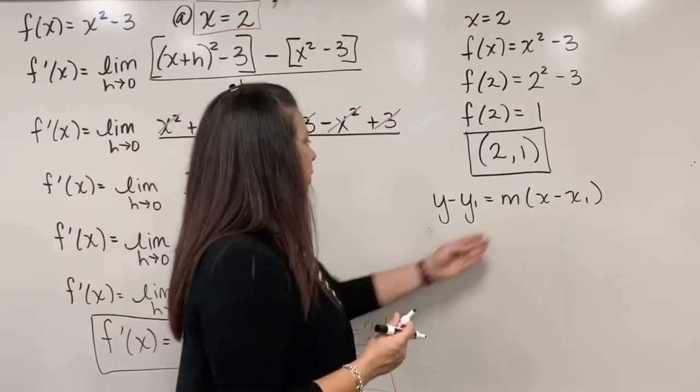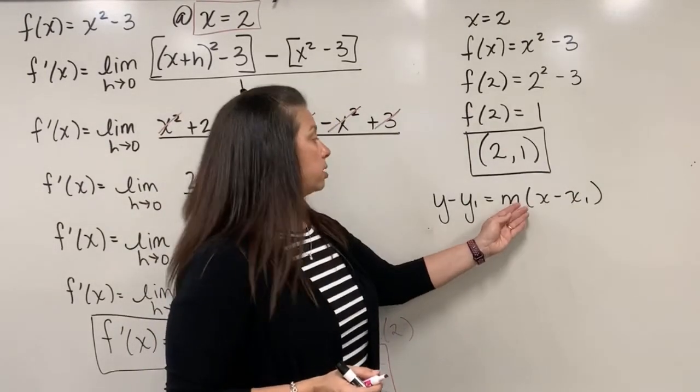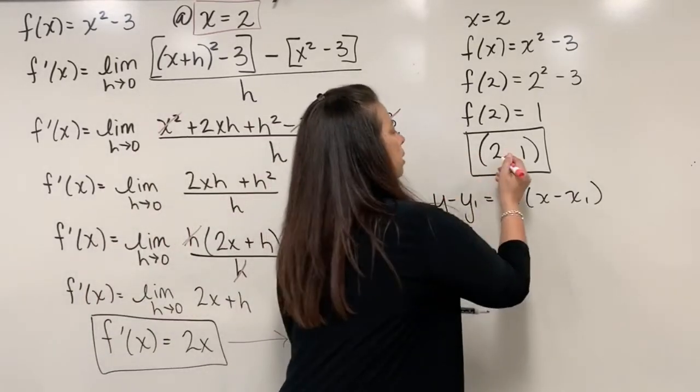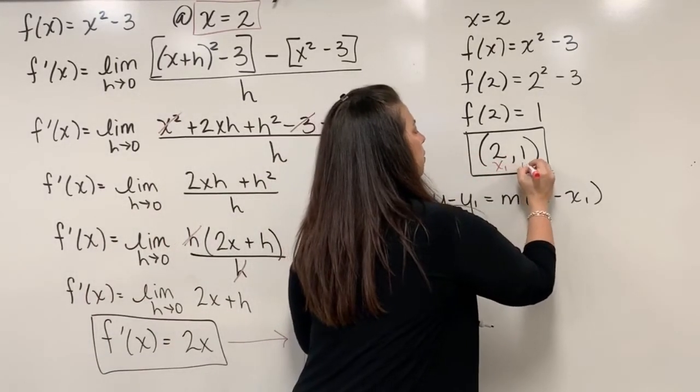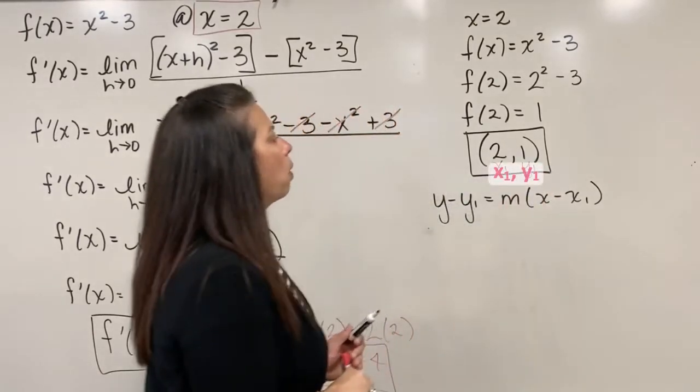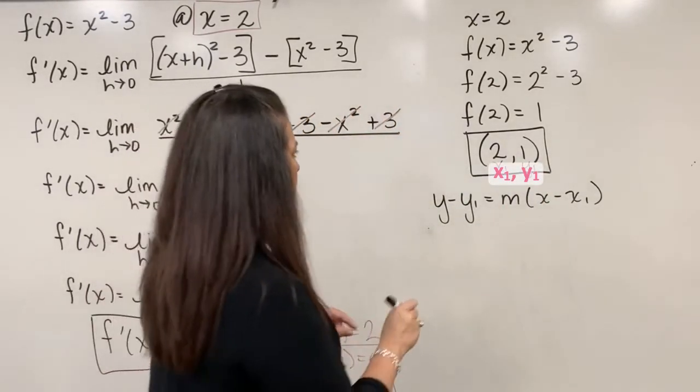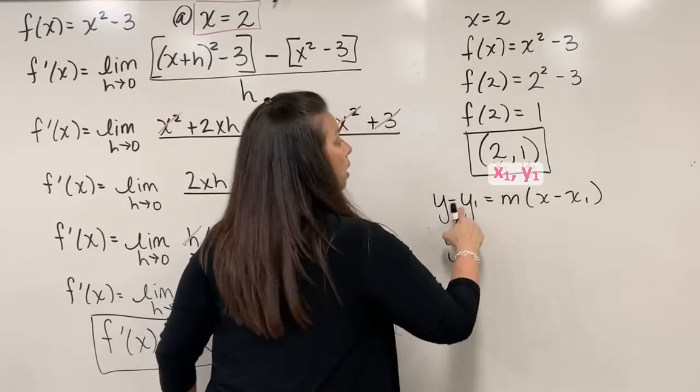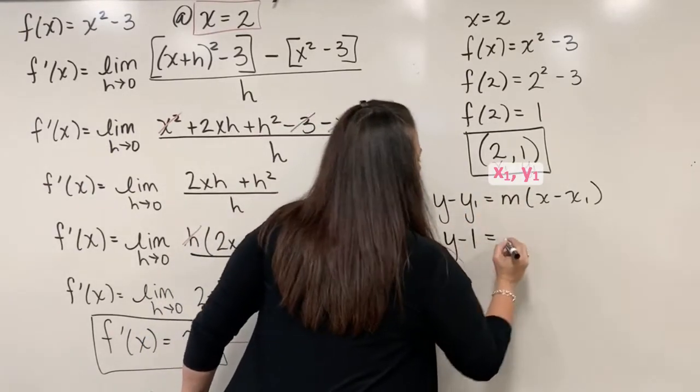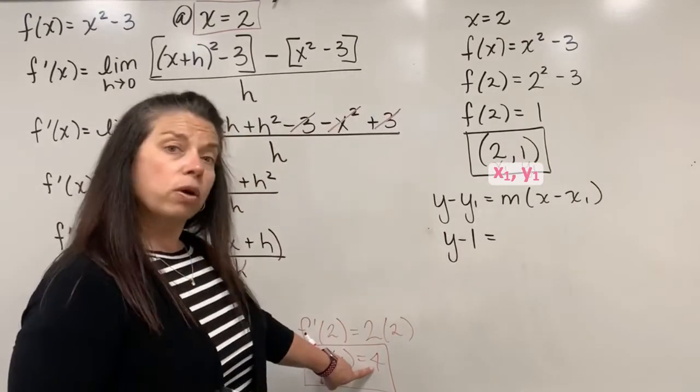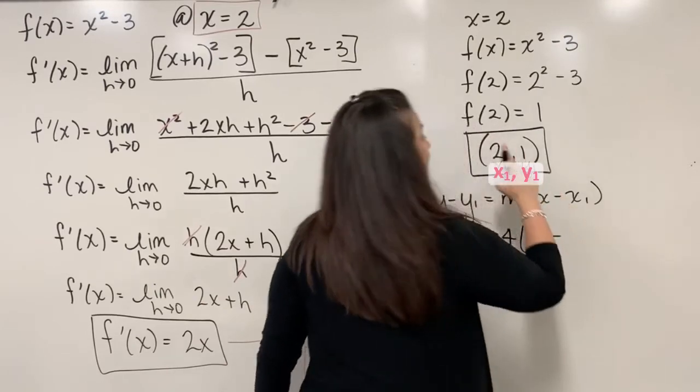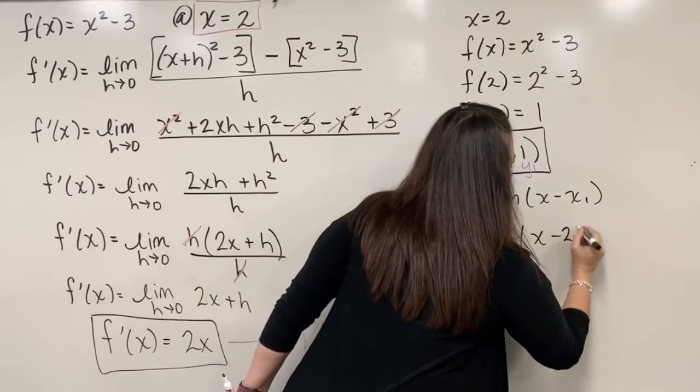And the 4 will be my slope that'll be substituted in place for the m. The 2 here will actually be my x sub 1 and the y sub 1 will be my 1 that I have on that point. So I start off here with y minus y1, which is 1. And that's going to be equal to my 4 that I found from the derivative times x minus x sub 1, which is 2.